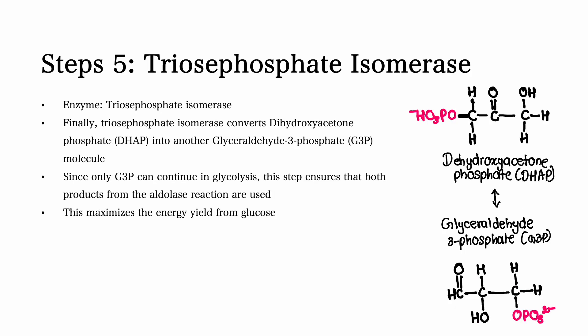Step number five. Triosephosphate isomerase is the enzyme in step number five. Triosephosphate isomerase converts dihydroxyacetone phosphate, also called DHAP, into another glyceraldehyde 3-phosphate, also called G3P. Since only G3P can continue through glycolysis, this step ensures that both products of the aldolase reaction are used. This maximizes the energy yield from glucose.